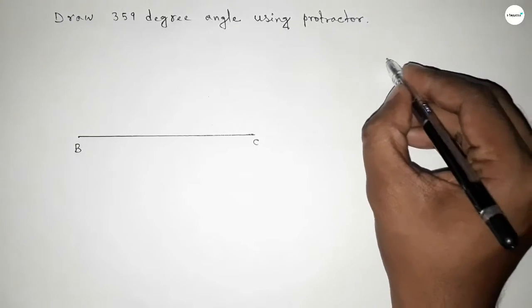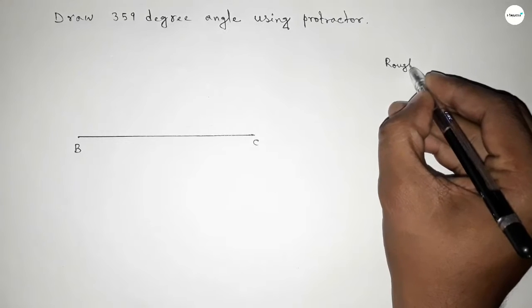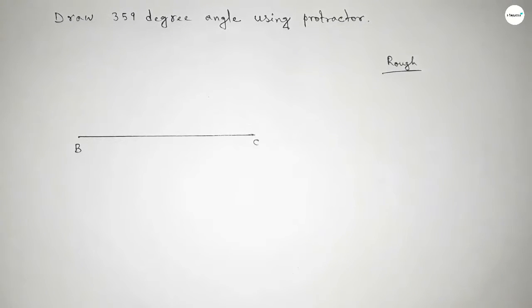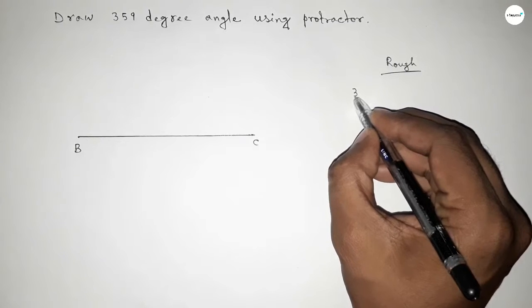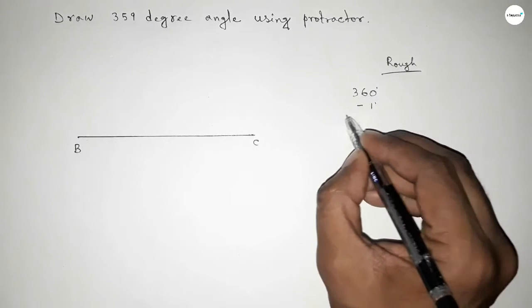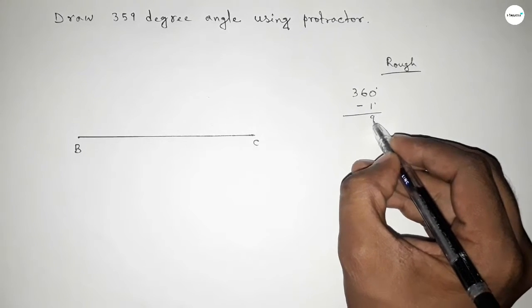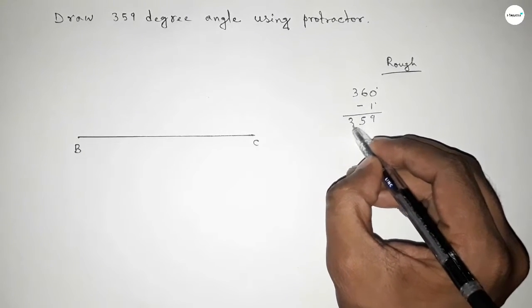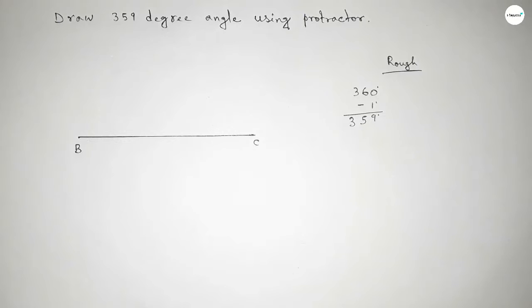Now drawing some rough space. If you subtract one degree from 360 degrees, then we can get 359 degrees. So subtracting one degree: this is nine, carry one, so five and three equals 359 degrees.